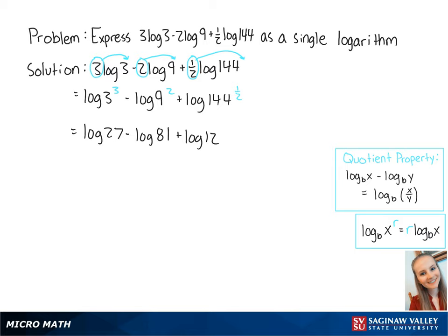Now we can use the quotient property to combine these logs. This equals the log of 1 third plus the log of 12.